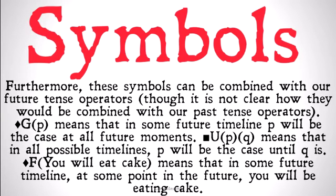Furthermore, these symbols can be combined with our future tense operators, though it's not quite clear how they could be combined with our past tense operators. For example, 'diamond GP' means that in some future timeline P will be the case at all future moments. 'Box UPQ' means that in all possible timelines P will be the case until Q is. And 'diamond F you will eat cake' means that in some future timeline, at some point in the future, you will be eating cake — probably a true statement.